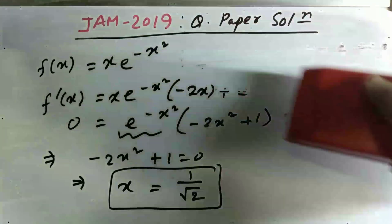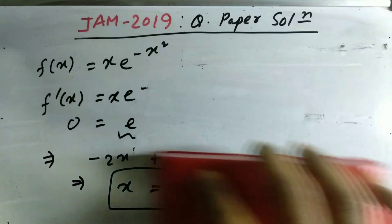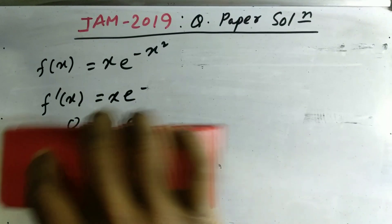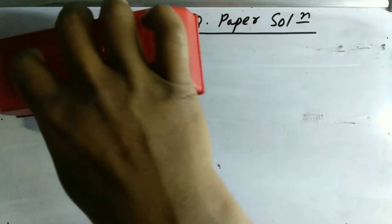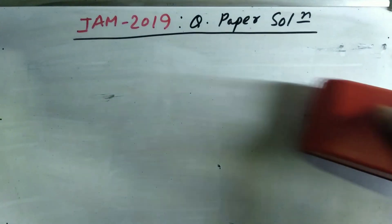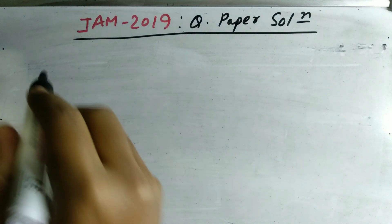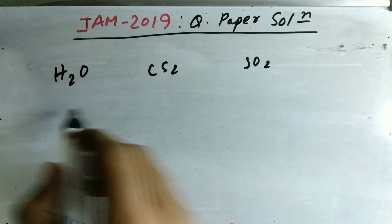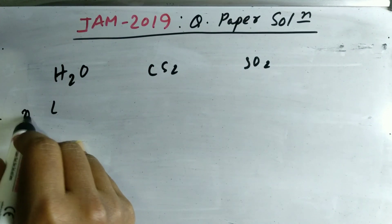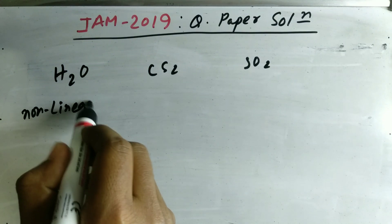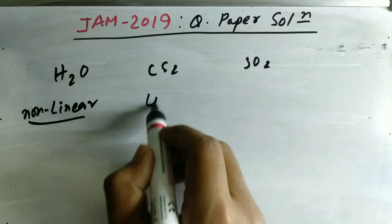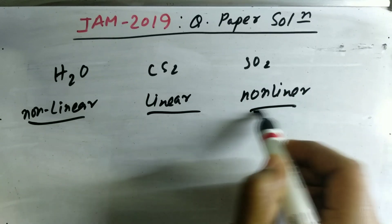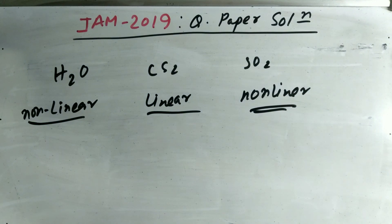Now let's talk about another question from JAM 2019: the number of bending modes of vibration for three given molecules — H₂O, CS₂, and SO₂. H₂O is non-linear because it is a V-shaped molecule. CS₂ is linear. SO₂ is non-linear with a trigonal planar structure.